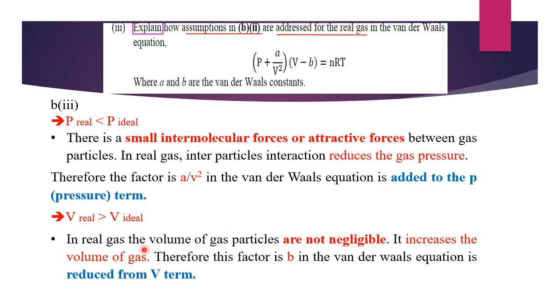While in real gas, the volume of gas is larger than ideal gas. In real gas, the volume of gas particles are not negligible. It increases the volume of gas. Therefore, the factor B in the Van der Waals equation is reduced from the V term.